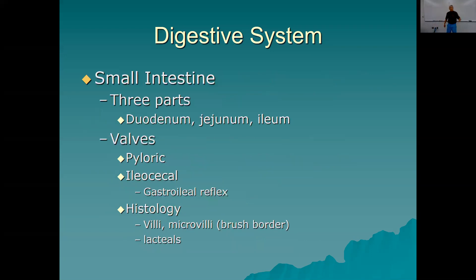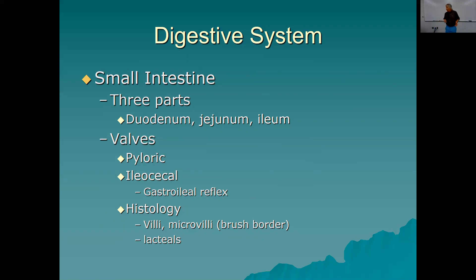Now we shift to the small intestine — three parts. Duodenum is the first and shortest part, where all secretions from the pancreas and liver enter. The jejunum is the middle part where most digestion and absorption occurs. Finally, the ileum is the last part, connecting to the large intestine; it is where vitamin B12 and intrinsic factor are absorbed.